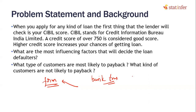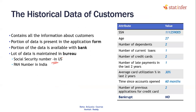In the US you can use a social security number; in India you can use a PAN card number to find out all transactions a particular customer has made. We can get to know the customer age, number of dependents, number of current loans, number of credit cards, number of late payments in the last two years, average card utilization, and how long the customer has been with the bank - new or from past five to ten years.